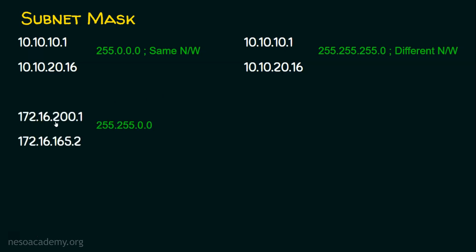Next example: 172.16.200.1 and 172.16.165.2. Can these two devices communicate with each other with the class B subnet mask? Yes, because the class B subnet mask checks the first two octets. Since both IP addresses start with 172.16, communication is possible with the help of a switch — they do belong to the same network.